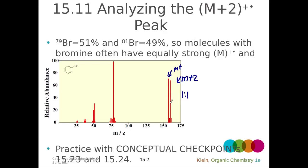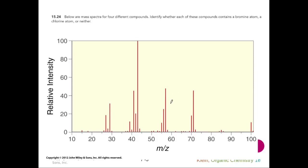Be careful if you see these kinds of patterns — make sure the rest of the spectrum makes sense. For example, 156 minus 79 and 158 minus 81 both give 77 for the phenyl group left over. It could just be something that looks like a bromine or chlorine pattern, but you may not actually have your molecular ion peak there at all and might just be seeing fragmentation.